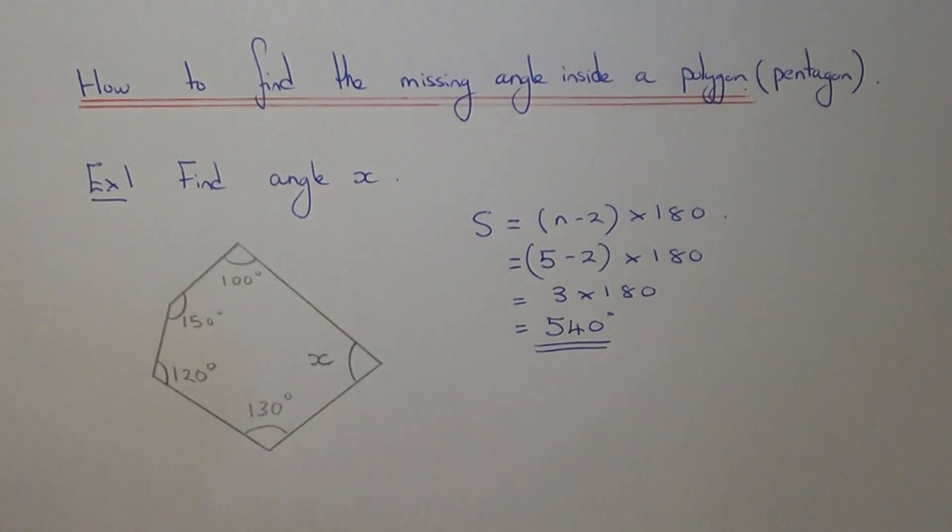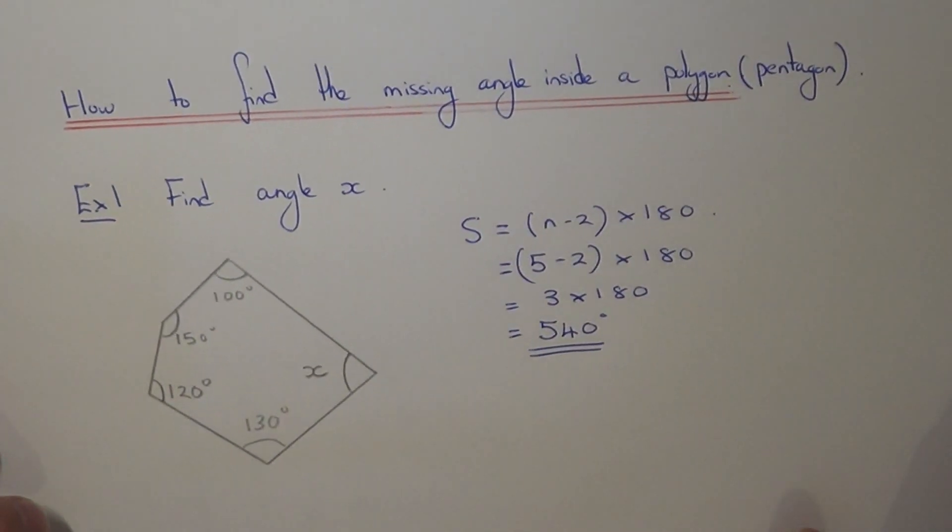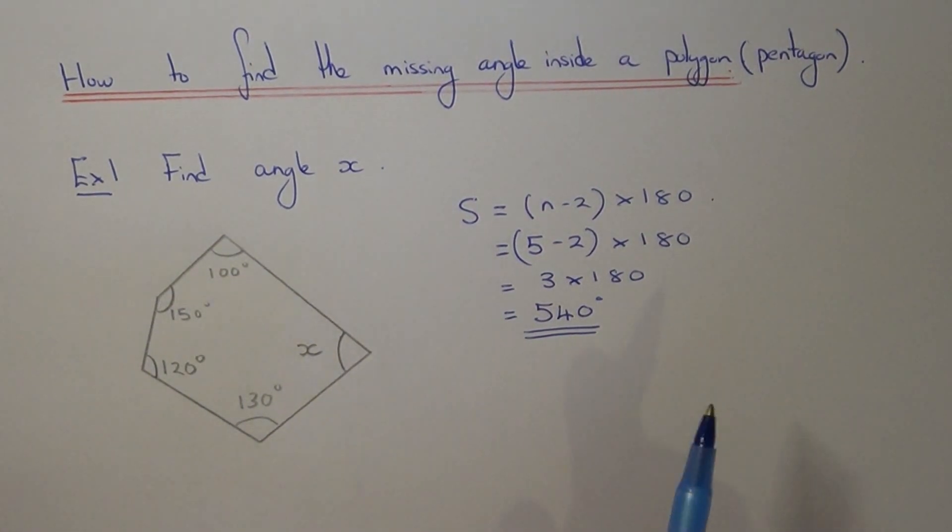So this is the sum of interior angles of a pentagon. You might actually remember, if you do enough of these questions, that the angles inside the pentagon add up to 540.